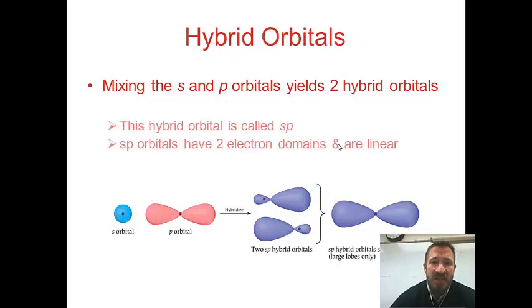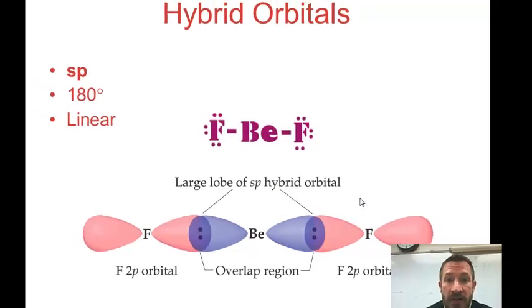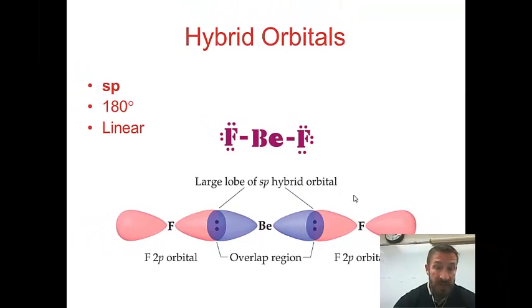So what does this mean? Well, this hybrid orbital, two important things: it's an SP orbital, that it's linear, and that there are two electron domains. So you'll see these electrons are negative, and they're going to repel each other and get as far away from each other as possible. They're going to be 180 degrees. So this is BeF2.